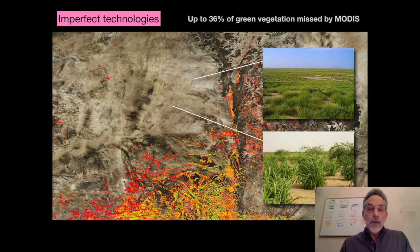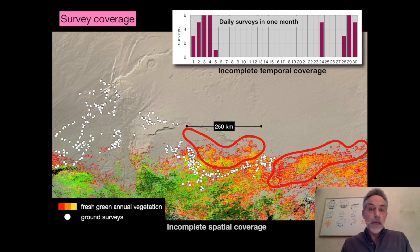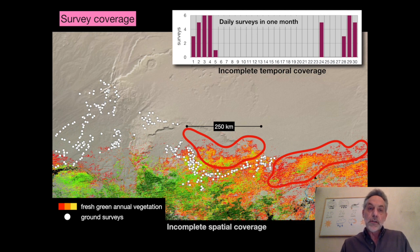Similarly, we use MODIS imagery to help us understand where vegetation is becoming green in the desert. Studies suggest that up to 36% of green vegetation is being missed by MODIS. This imperfect technology obviously has great impacts on the precision of our forecasting. Looking at survey coverage undertaken by national survey and control teams, there is incomplete coverage both over time and space. Surveys are not conducted every day, and they don't cover all areas, potentially missing important green areas where there might be locust presence, breeding, and increasing numbers.